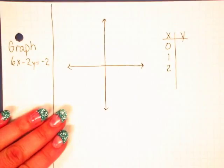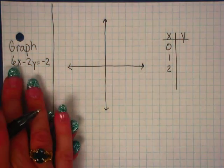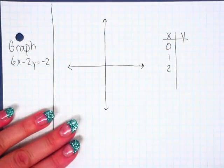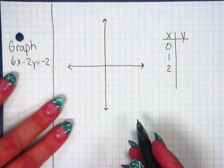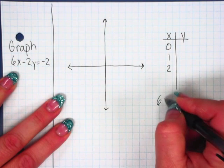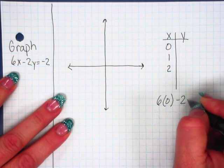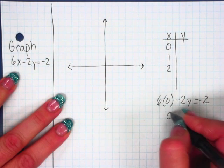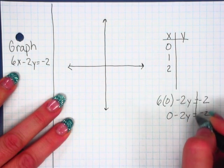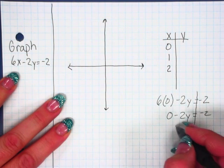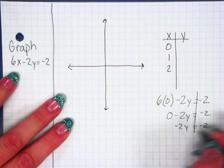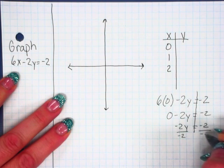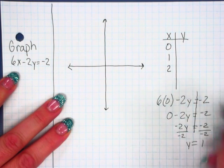All right. Let's graph another one. So again, we're looking at an equation. 6x minus 2y equals negative 2. We're going to start with x equals 0. So 6 times 0 minus 2y equals negative 2. 0 minus 2y equals negative 2. Remember to draw your mirror. Negative 2y equals negative 2. Opposite operations. y equals 1.